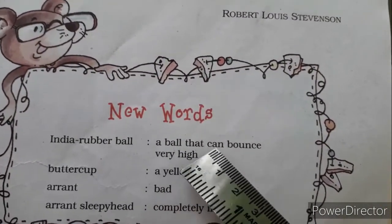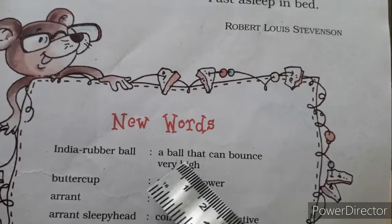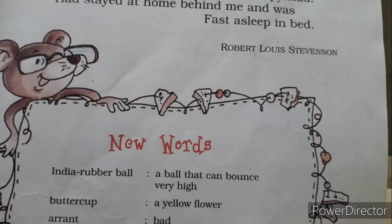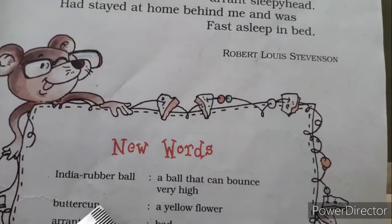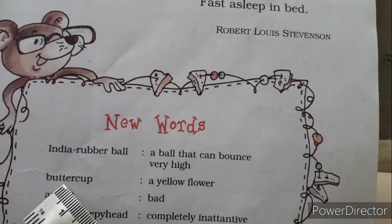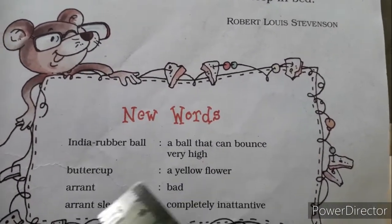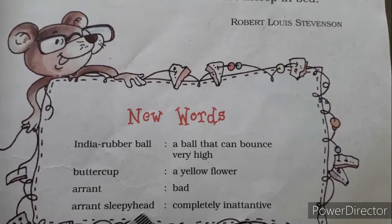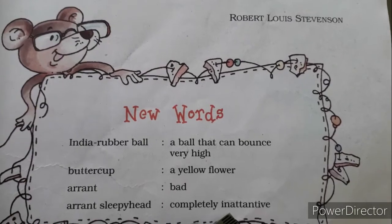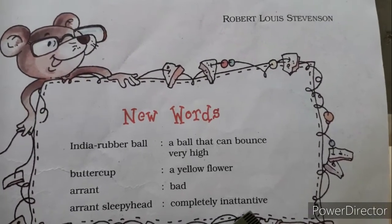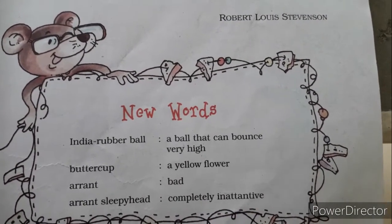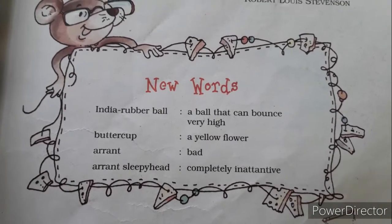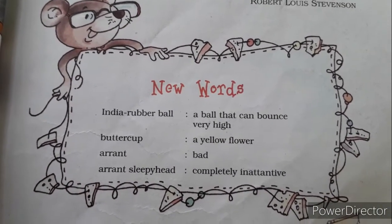Let us see new words: India rubber ball — uska matlab kya hota hai — a ball that can bounce very high. Buttercup — a yellow flower. Errant sleepy head — completely inattentive. So here we end our session, rest we will see tomorrow. Thank you.